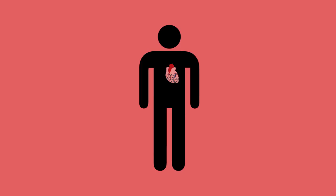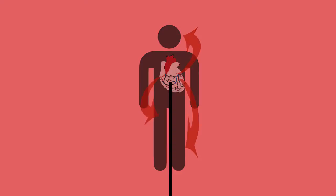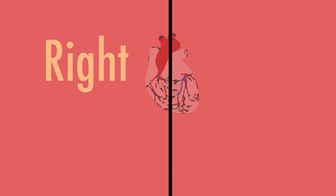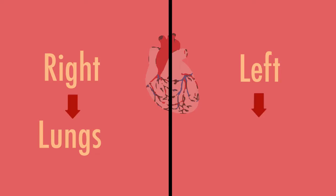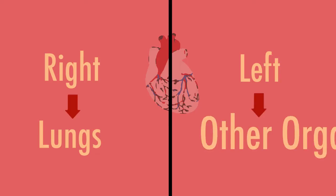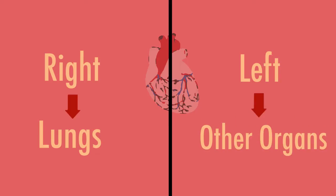You could think of the heart like a pump that pushes blood to the different parts of the body. It is composed of four chambers separated into the right and left side. The right side pumps blood to the lungs while the left side pumps blood to the rest of the body and other organs.